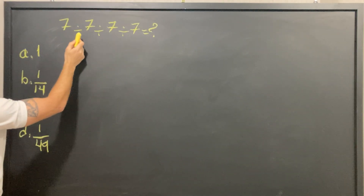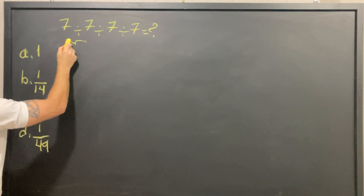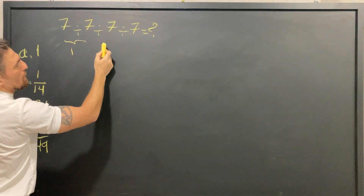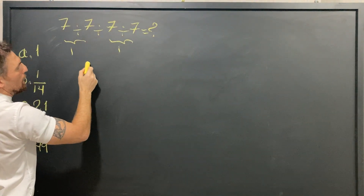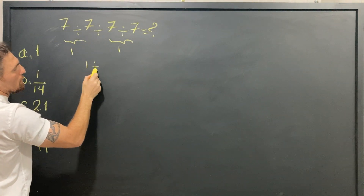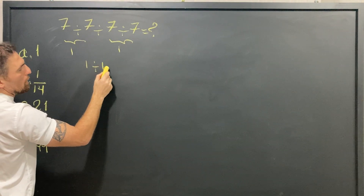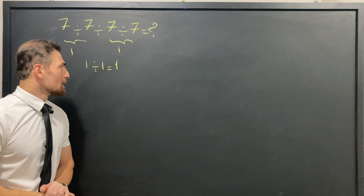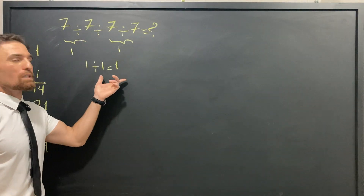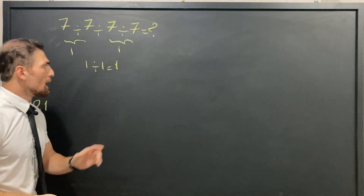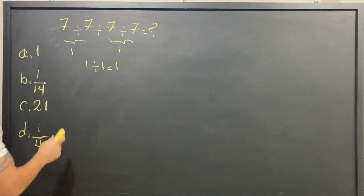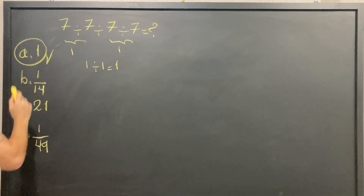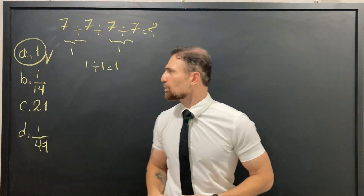They say 7 ÷ 7 = 1, and this 7 ÷ 7 = 1, and 1 ÷ 1 = 1. They are happy they solved it in seconds and choose Option A.